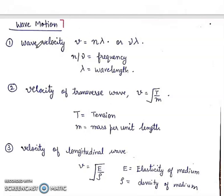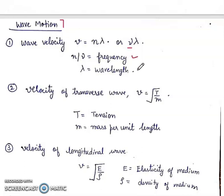First, wave velocity. Wave velocity is given by V = νλ. Nu (ν) or N is the frequency, and lambda (λ) means wavelength. So V = Nλ or νλ.